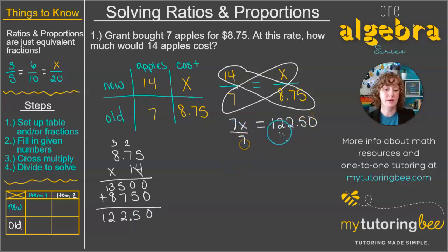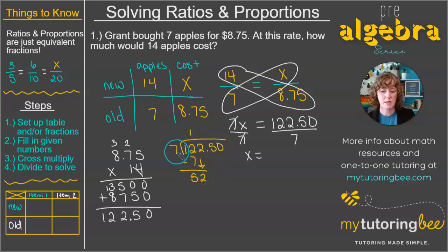So 122.50. Now we're going to divide by 7 on both sides of the equation so that we get rid of that 7 and we just have x left over. So now we need to figure out what is 122.50 divided by 7. 7 can go into 12 just once. When we subtract, we get 5. Bring down our 2. 7 can go into 52 seven times. That gives us 49. Bring down our 5. And then 7 can go into 35 five times.